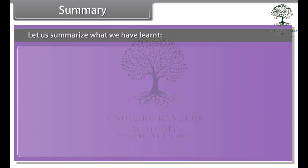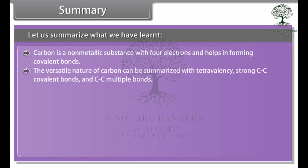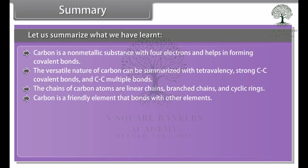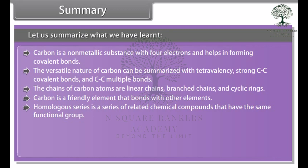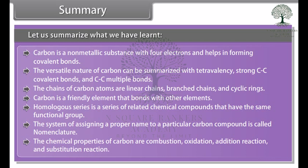Let us summarize what we have learned. Carbon is a non-metallic substance with four electrons and helps in forming covalent bonds. The versatile nature of carbon can be summarized with tetravalency, strong carbon-carbon covalent bonds and carbon-carbon multiple bonds. The chains of carbon atoms are linear chains, branched chains and cyclic rings. Carbon is a friendly element that bonds with other elements. Homologous series is a series of related chemical compounds that have the same functional group. The system of assigning a proper name to a particular carbon compound is called nomenclature. The chemical properties of carbon are combustion, oxidation, addition reaction and substitution reaction.